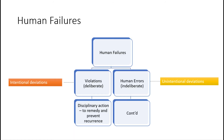Before we talk about human errors further, let's take a step back and look at human failures in general. Human failures are of two kinds. First are violations — these are deviations caused deliberately, meaning somebody is doing something willfully. These can be fixed by disciplinary actions.